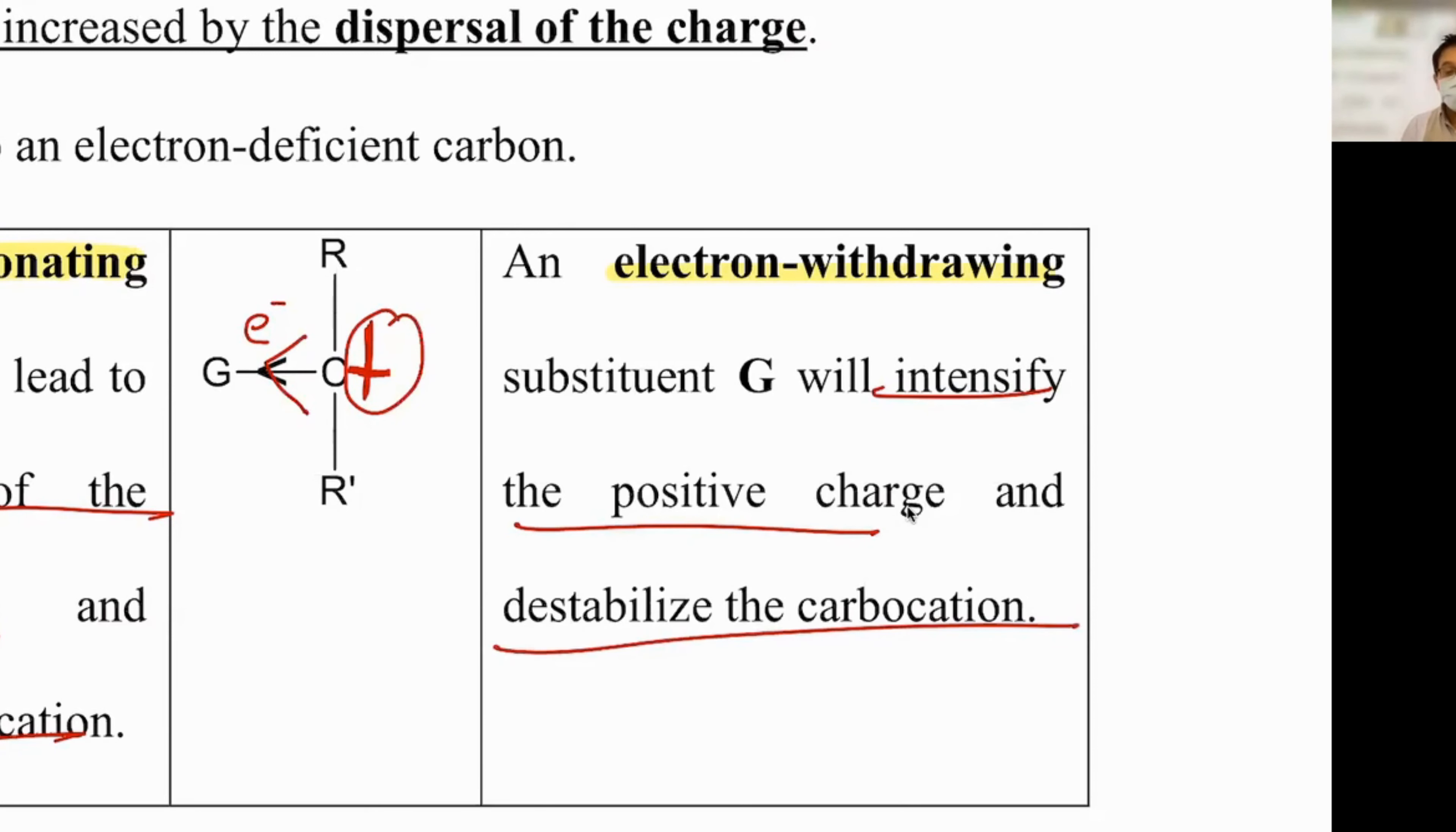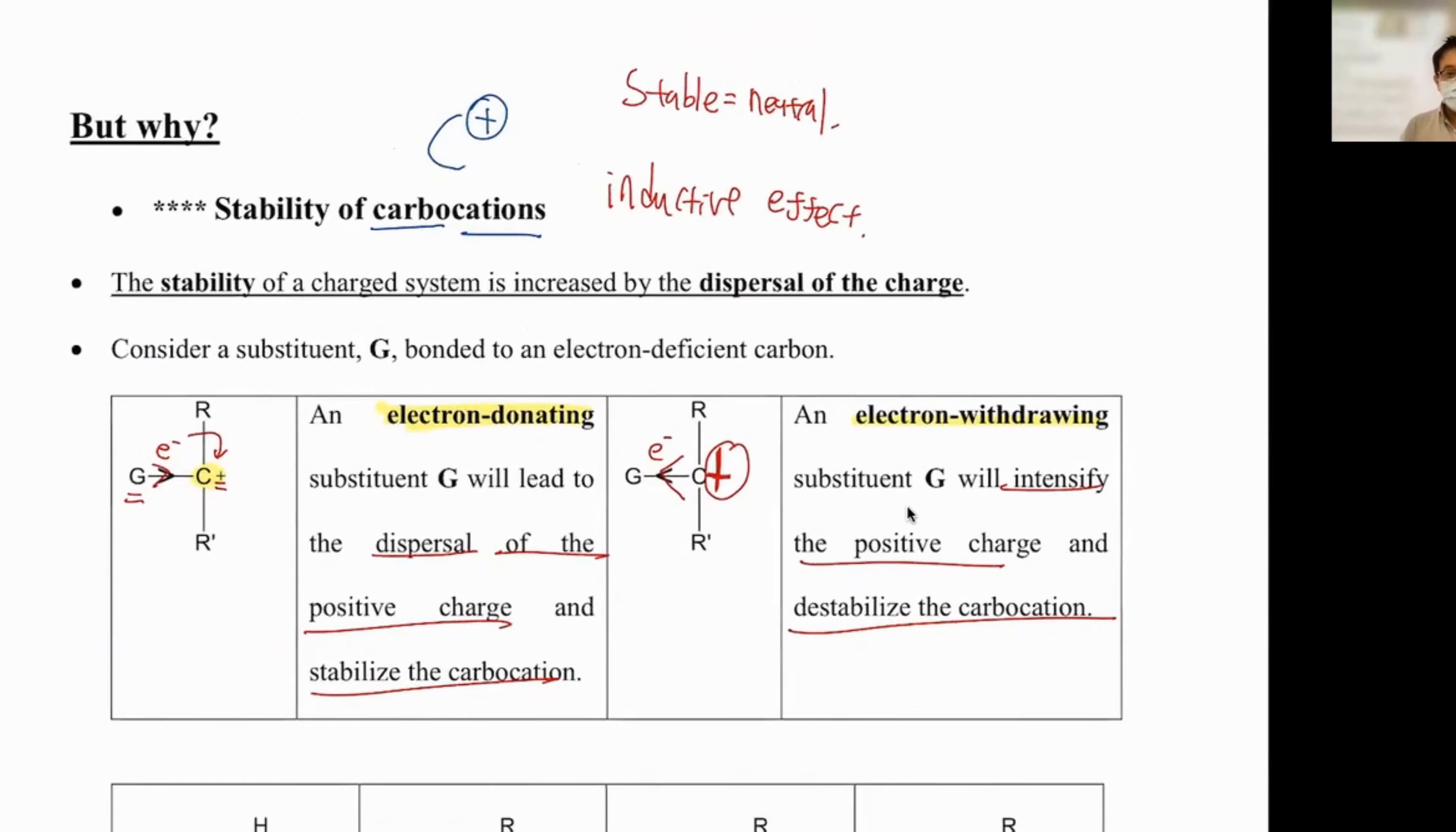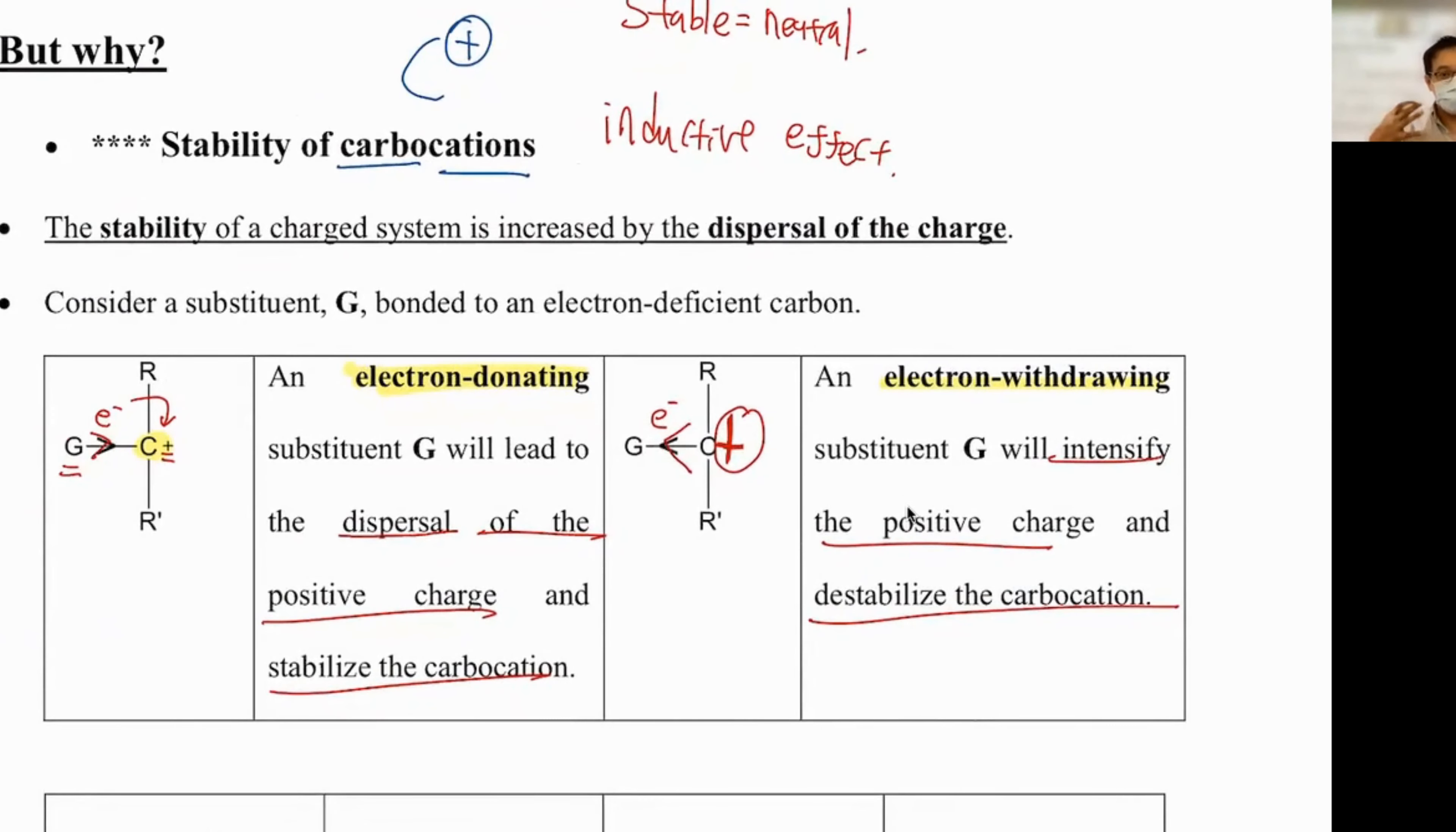Therefore you destabilize the carbocation. So as a general rule, the more donating groups you have, or if you have a donating group, it's going to help stabilize the carbocation. Withdrawing? No, not so much.